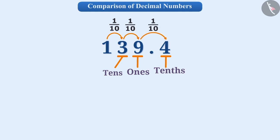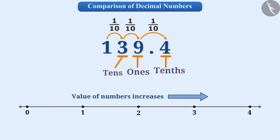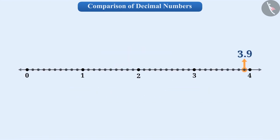You must be knowing that on the number line, the value of numbers increases towards the right and decreases towards the left. With this understanding, we can compare the decimal numbers.